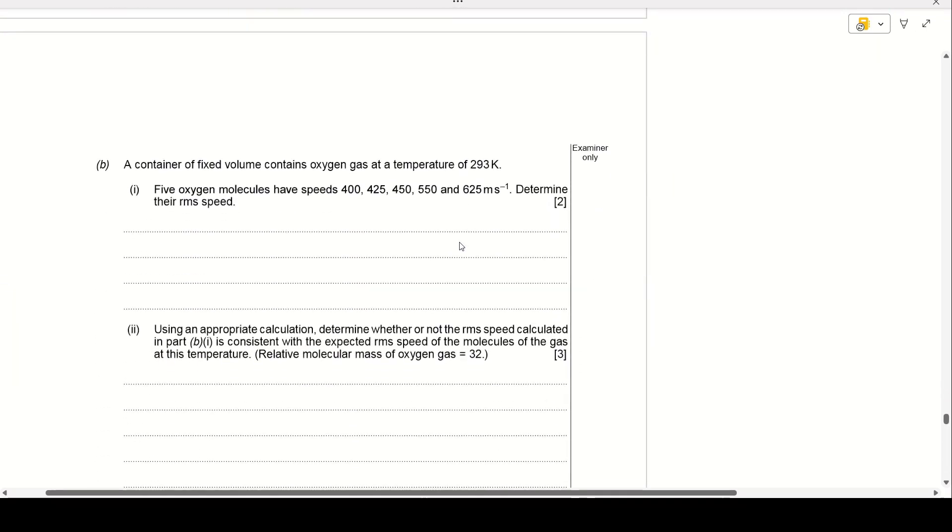Part B. We've got a container of fixed volume, contains oxygen gas at a temperature of 293 Kelvin. And we've got five oxygen molecules with speeds of 400, 425, 450, 550, and 625 metres per second. And we've got to determine their RMS speed. Well, the root mean square speed, RMS, literally means it's the square root of the mean of the squares of the gas molecules.